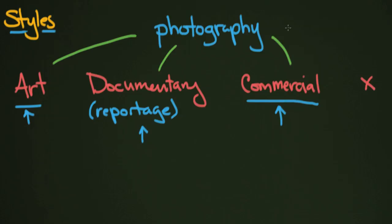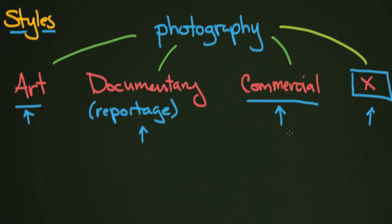The X group is basically people who are using photography to make a sort of public record. It's not documentary in the sense of being for a magazine or something like that, but maybe police officers or salesmen — people using photography in their work but not necessarily in those other formats. I haven't found it defined anywhere on the internet, so I'm not even going to give it a name, but I just want to make you aware that it's out there.